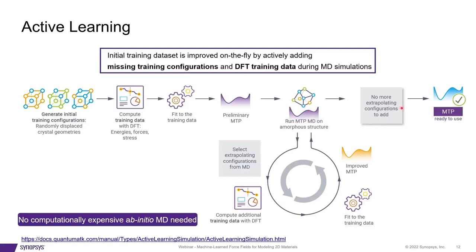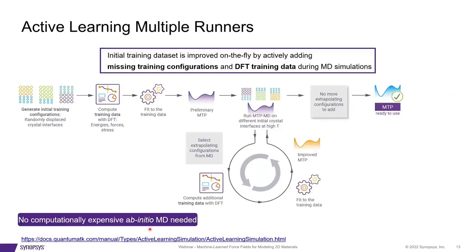This ensures that the MTP will be stable in the molecular dynamics run at a given condition. Active learning can be performed for different temperatures and pressures to ensure transferability, so no computationally expensive ab initio molecular dynamics is needed. Recently, multiple runners have been introduced in the active learning process, so users can now set up multiple molecular dynamics runs within a single active learning process, sampling the configurational space much more efficiently and improving the MTP at a faster rate.